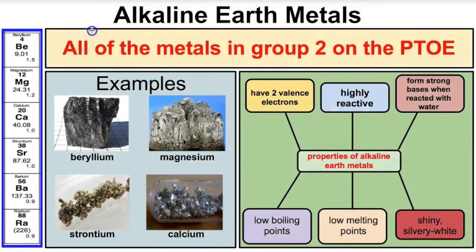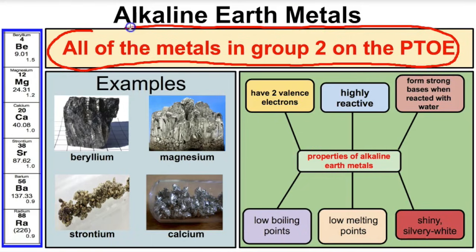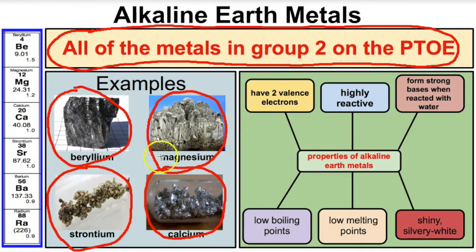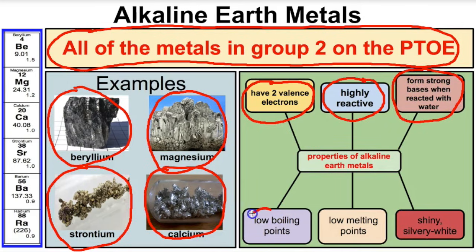Next we have the alkaline earth metals — all the metals in group two on the periodic table, from beryllium all the way down to radium. Examples include beryllium, magnesium, calcium, and strontium. Some physical and chemical properties: they have two valence electrons available for bonding, they're highly reactive, they form strong bases when they react with water, they have low boiling and melting points, and they're typically shiny and silvery white in appearance.